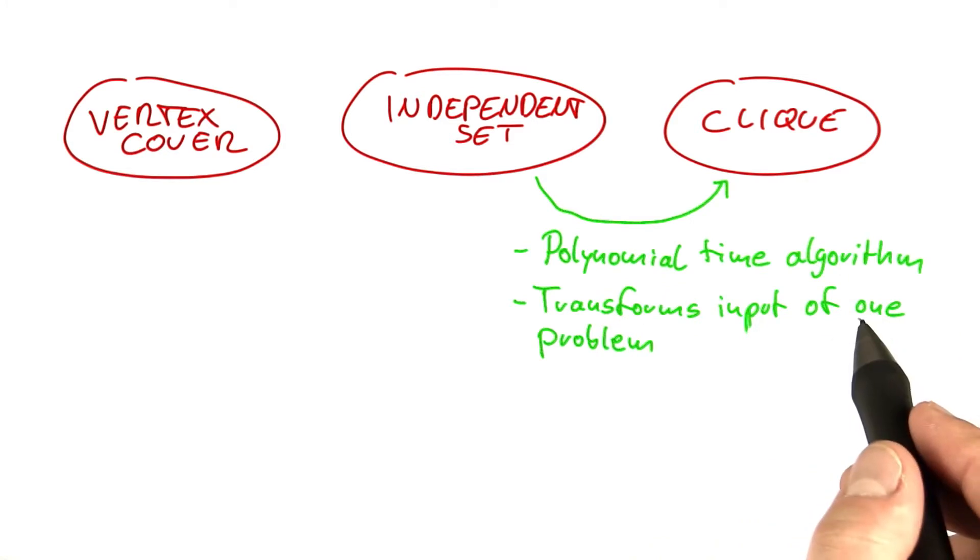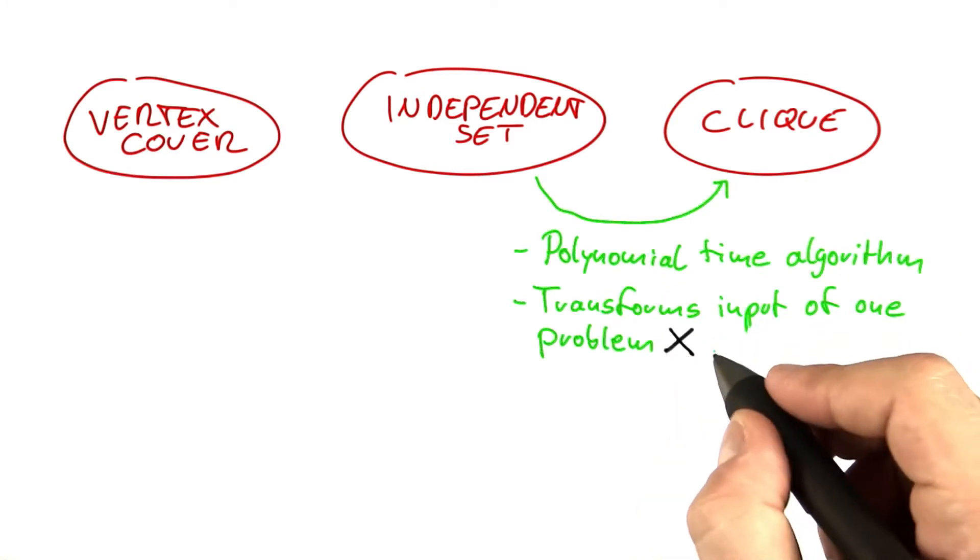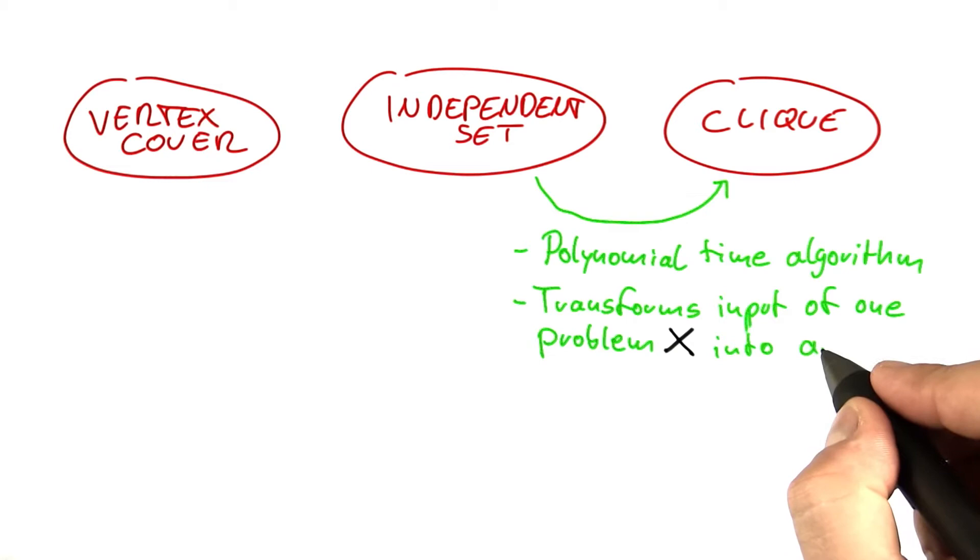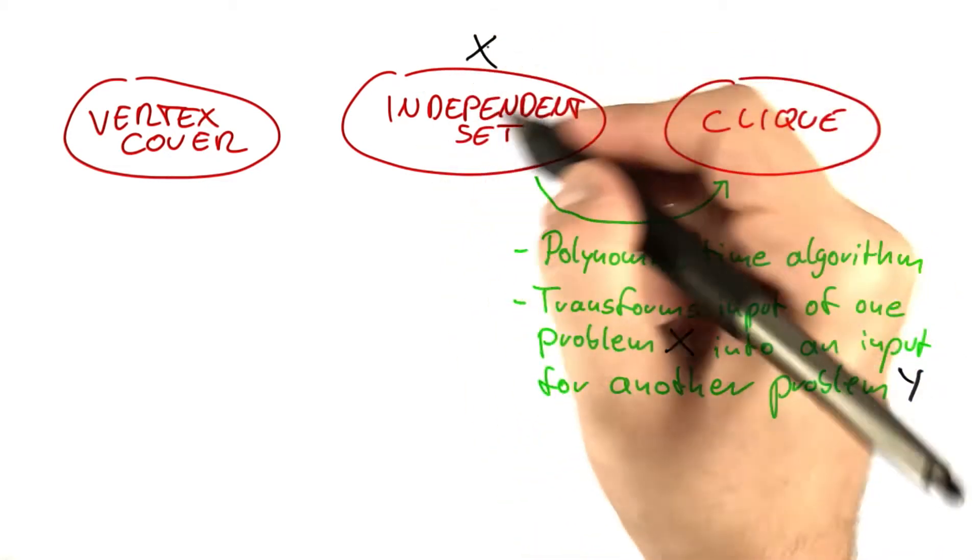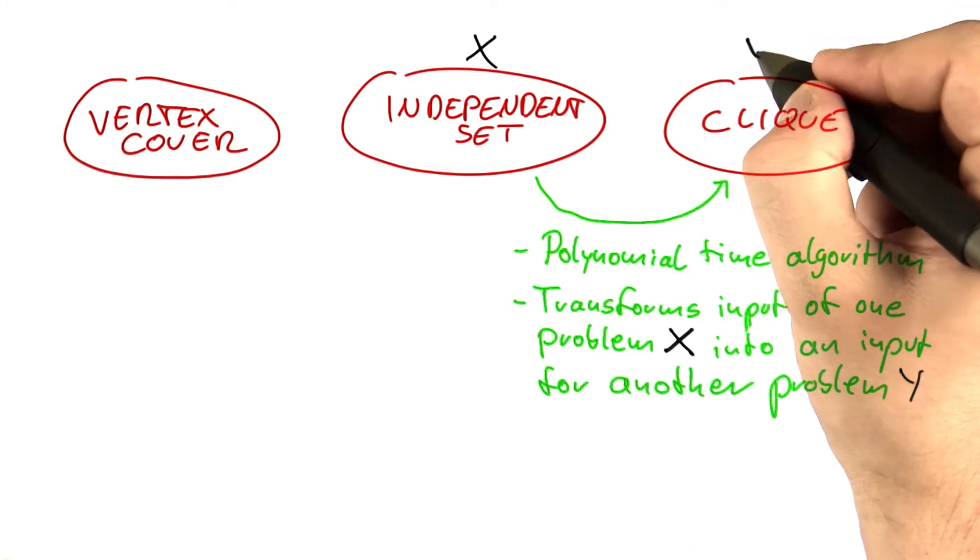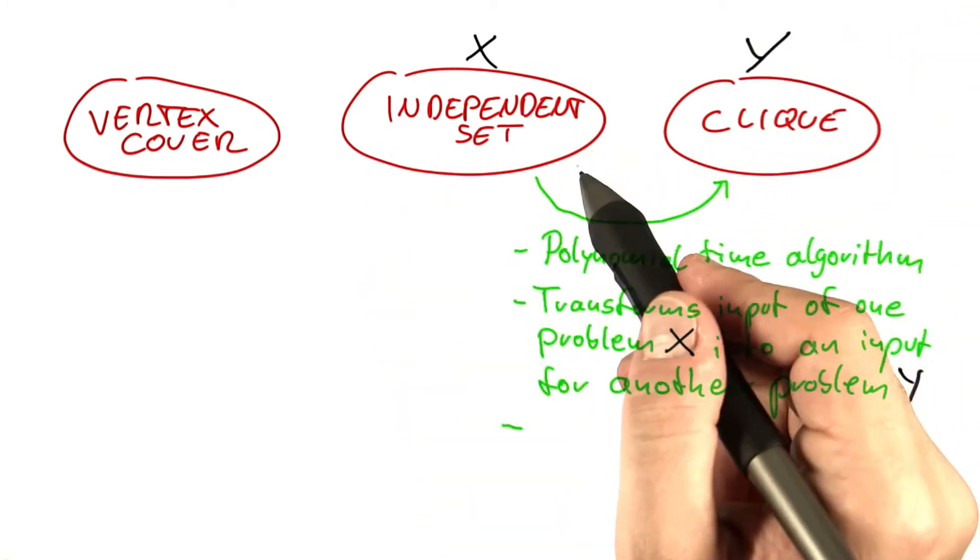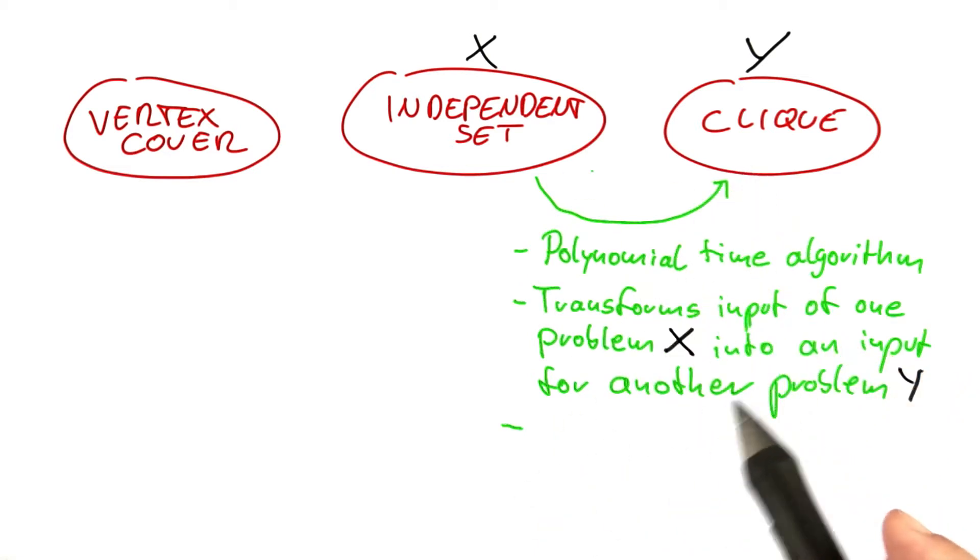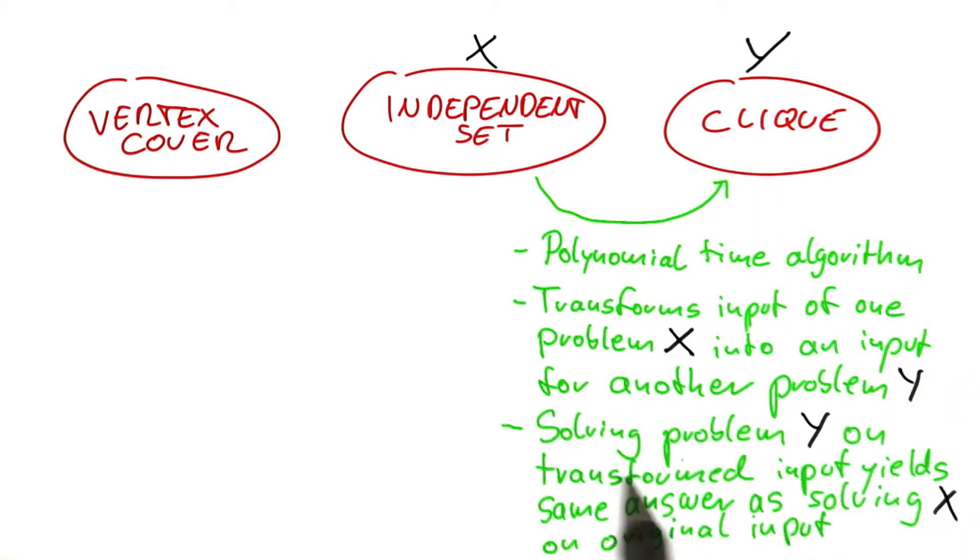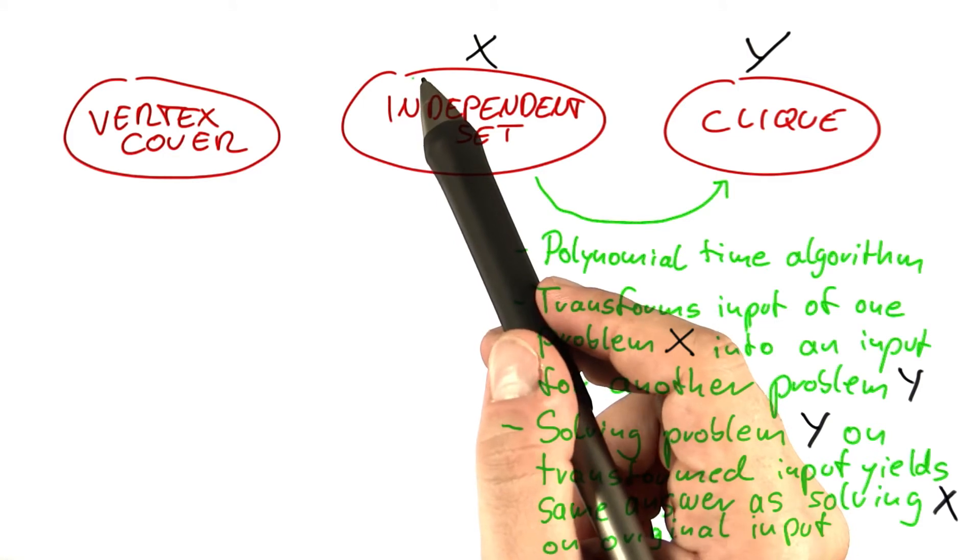So the algorithm transforms the input of one problem, say x, into an input of another problem, y. For example, we take independent set and transform that graph into an input for clique. And now you'll see one of the advantages of working with decision problems because the third condition is rather easy to state, because we can now simply say that solving the problem y on the transformed input yields the same answer as solving the original problem on the original input. So these three statements here are the same thing that you have seen in the last unit.